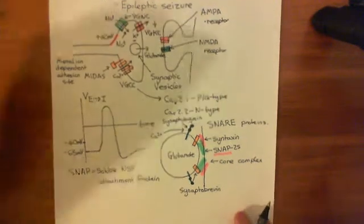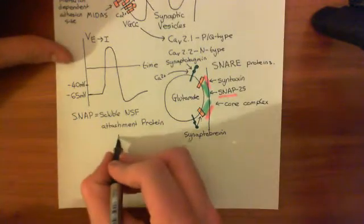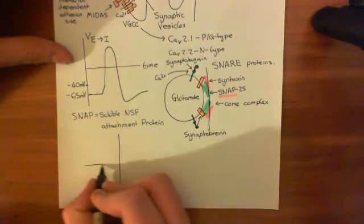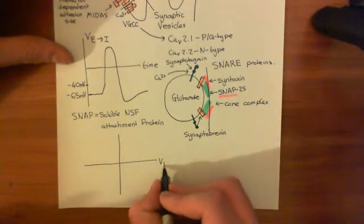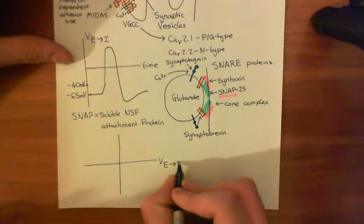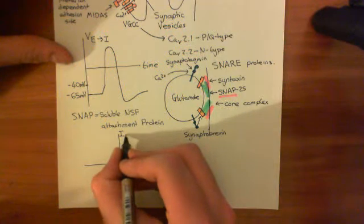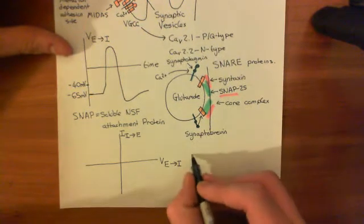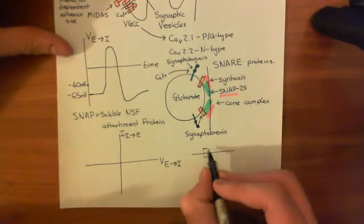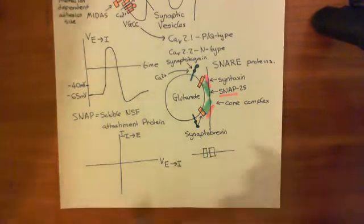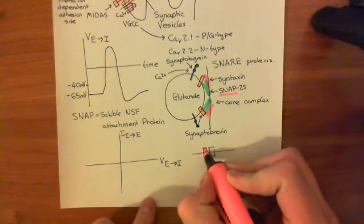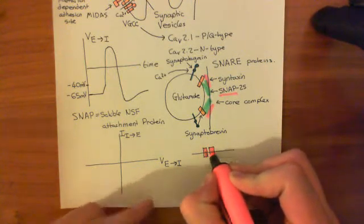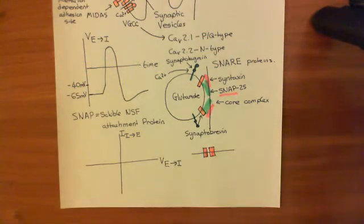If we plot voltage across the cell membrane from extracellular to intracellular against current from intracellular to extracellular, then remember what happens for the AMPA receptor. The AMPA receptor consists of four subunits, each with a ligand binding domain for glutamate. You need to bind four glutamates to each of those ligand binding domains to get full conductance.